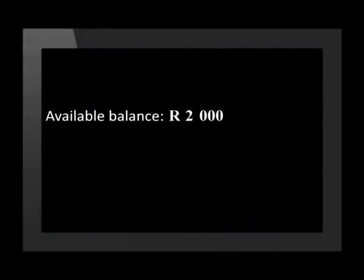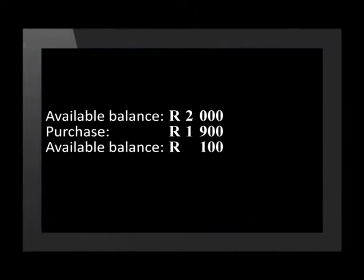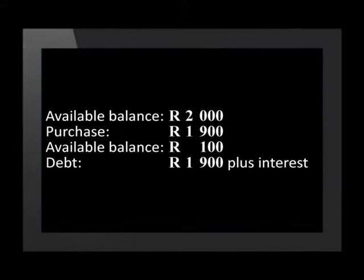Let's look at how this works. Tembi has a credit card account with a credit facility of 2,000 Rand. She has not put any money into the account, which means she has an available balance of 2,000 Rand to spend. She purchases a TV for 1,900 Rand and charges it to the account, leaving an available balance of 100 Rand. She now has a debt of 1,900 Rand plus the interest that will be added by the financial institution. The interest Tembi will be charged depends on the credit agreement she has with the bank.